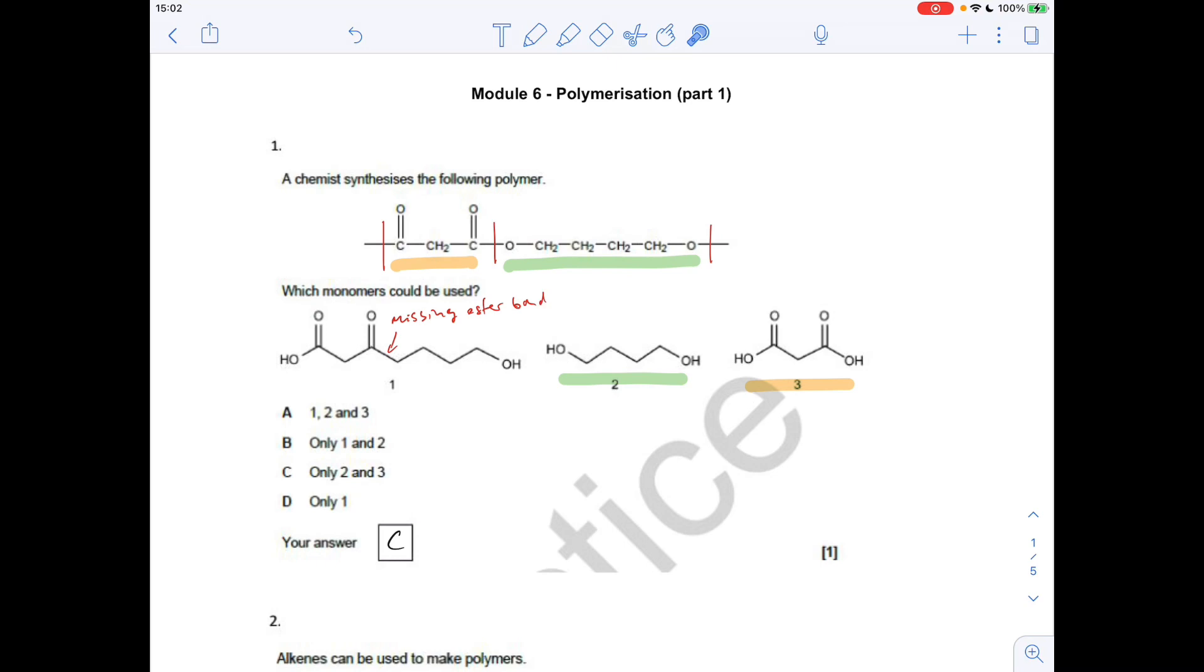Okay, so question one, a chemist synthesizes this polymer here. I've broken it up into its two parts. We've got this bit here, so that's going to come from a dicarboxylic acid. And this part here is going to come from a diol. It's created this ester linkage when they've joined together.